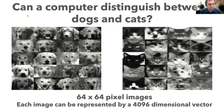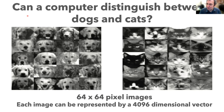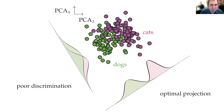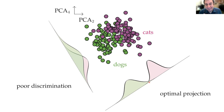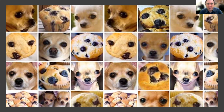Can a computer distinguish between cats and dogs? The answer is yes. Using the same method applied to gene expression, you can take those vectors representing pictures and apply principal component analysis. Plotting PC2 versus PC4, the cats appear as purple dots and the dogs as green dots. You look for an optimal projection — one where the confusion zone, where you're not sure if it's a cat or a dog, is minimized. This can be coded up pretty quickly in MATLAB or Python.